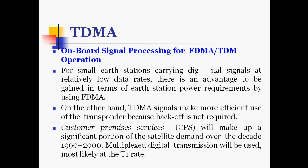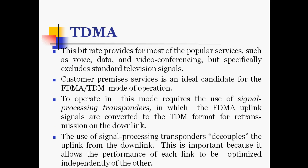For on-board signal processing for FDMA and TDMA operations, smaller stations carrying digital signals at relatively low data rates benefit from FDMA in terms of earth station power requirements. TDMA signals make more efficient use of the transponder because backoff is not required. Customer premises service (CPS) will make up a significant portion of satellite demand, and multiplexed digital transmission will be used most likely at the T1 rate, providing voice, data, and video conferencing services, but excluding standard television signals.